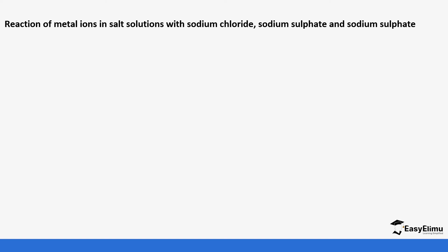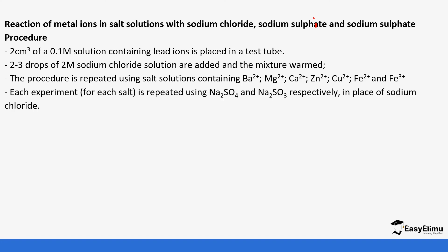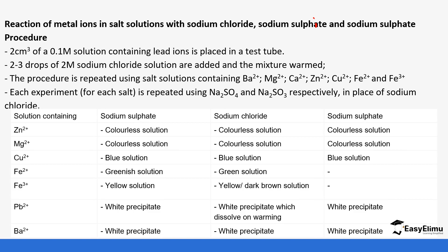The next topic is the reaction of metal ions with solutions of sodium chloride, sodium sulfate, and sodium sulfite. The intention is to show the solubility of some salts — chlorides, sulfites, and sulfates — and helps identify which are soluble and which are not. With sodium sulfate: zinc sulfate is soluble forming a colorless solution, magnesium sulfate is soluble, copper sulfate is soluble, iron(II) sulfate is soluble, and iron(III) sulfate is soluble.